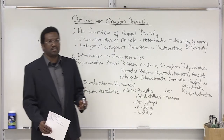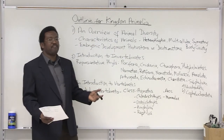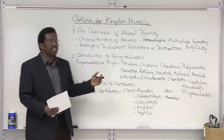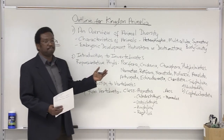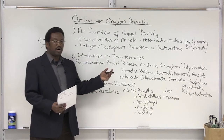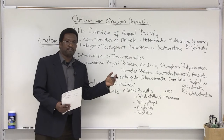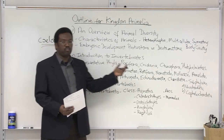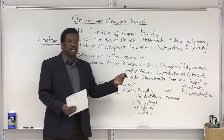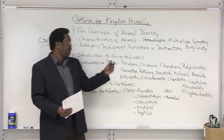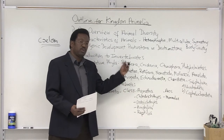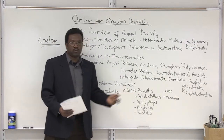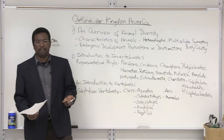You may be looking at the list and saying, well, that's every phyla in the animal kingdom. And that's correct. 97% of all the animals in the animal kingdom fall within the invertebrate group, and only 3% are actually vertebrates. What's the difference? Why invertebrates versus vertebrates? What does that really mean?